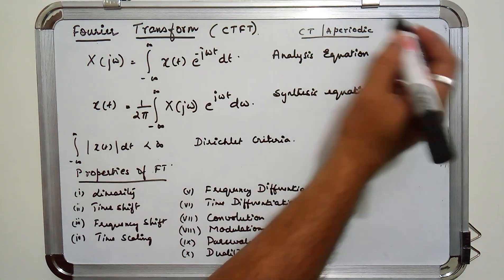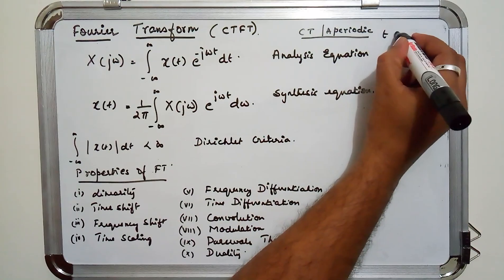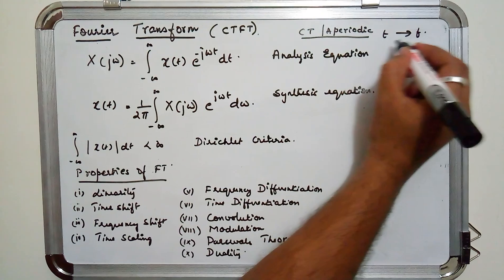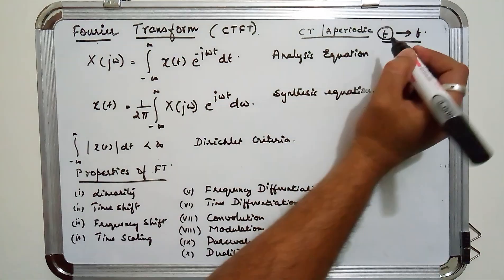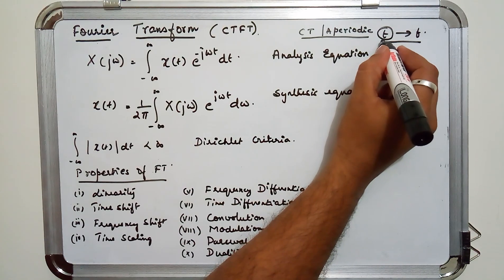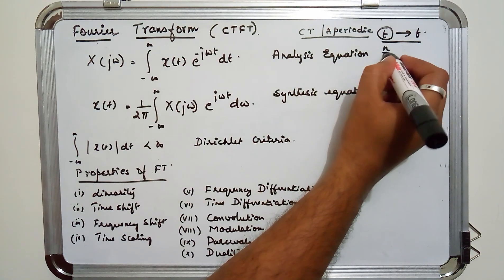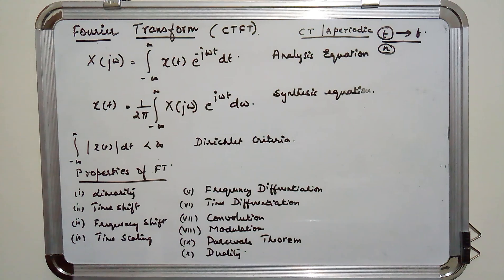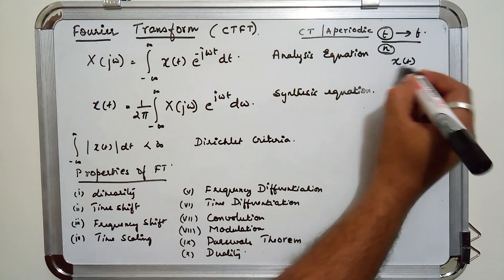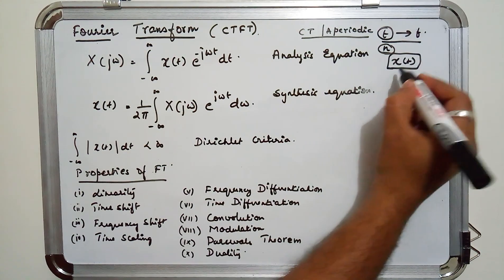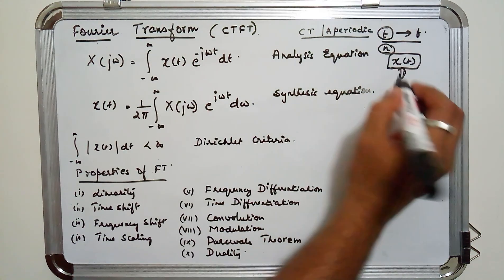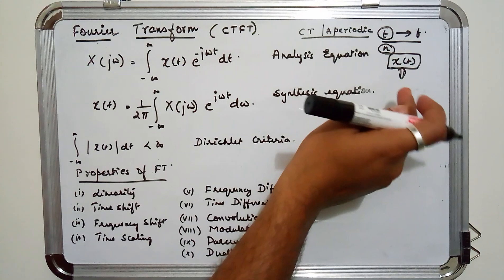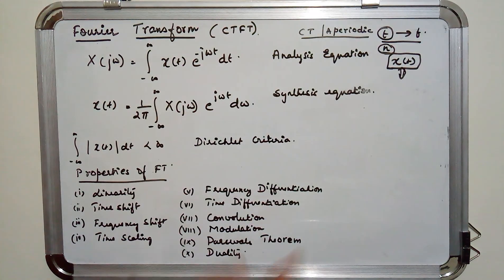What we are converting here is a signal in time domain to its corresponding frequency domain. Since it is a continuous time signal, the variable involved is T, not N as in the case of a discrete time signal. So we are converting x(T), that is a continuous time aperiodic signal, into its frequency domain counterpart X(jω) by taking the Fourier transform.